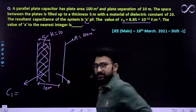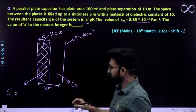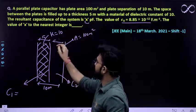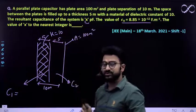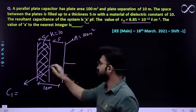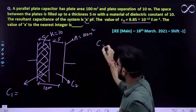Aur dusra capacitor hoga, let it be c2, jiska capacitance hoga, jismein andar sirf, andar aapka kuch bhi, koi bhi material filled up nahi hai. Toh dono ka capacitance ka series combination joh hoga, that would be the effective capacitance.